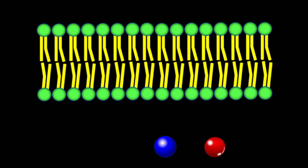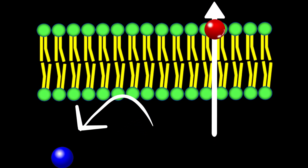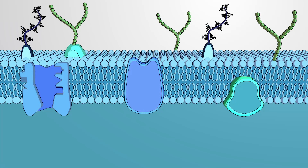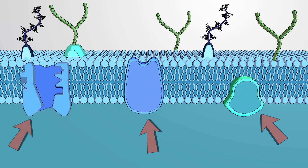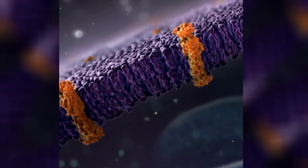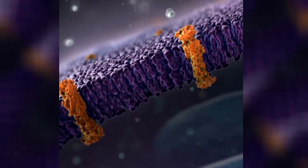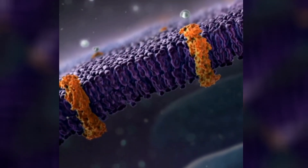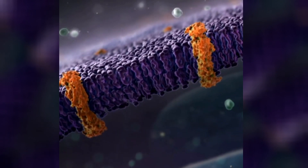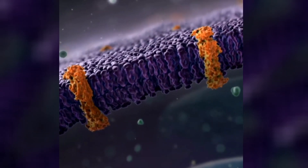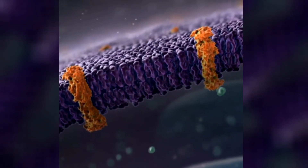One of the key functions of the cell membrane is to regulate the passage of molecules. Embedded within the phospholipid bilayer are various proteins that act as gatekeepers, facilitating the transport of specific substances across the membrane. These proteins can either allow molecules to freely diffuse or employ energy-driven processes, such as active transport, to move molecules against their concentration gradients.